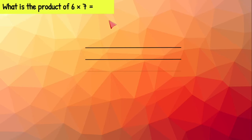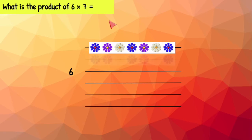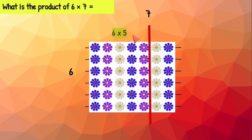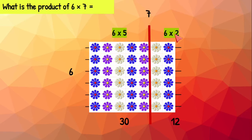Six times seven means six rows with seven flowers on each row. Let's go ahead and cut the array into two smaller arrays. Our first array has six rows with five flowers on each row, which is 30. This array has six rows with two flowers on each row, which is 12. Now we can put six times five plus six times two. We know six times five is 30 and six times two is 12. 30 plus 12 is 42. So six times seven is 42.